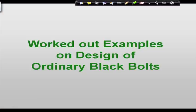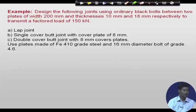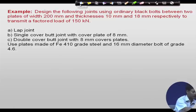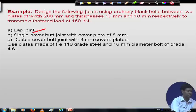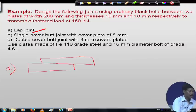The first example: design the following joints using ordinary black bolts between two plates of width 200 mm and thickness 10 mm and 18 mm respectively, to transmit a factored load of 150 kilo Newton. We will design these under: Case A — lap joint, and Case B — single cover butt joint.